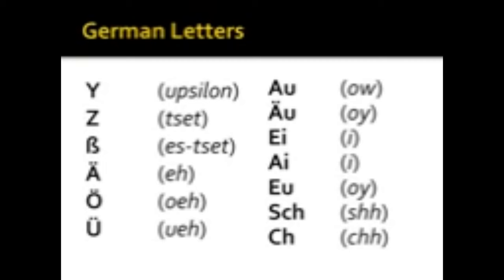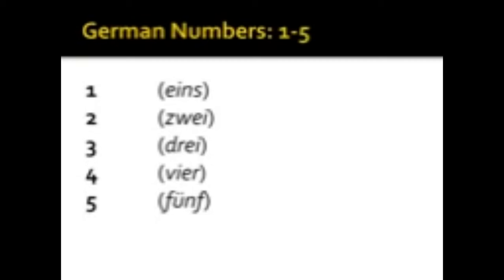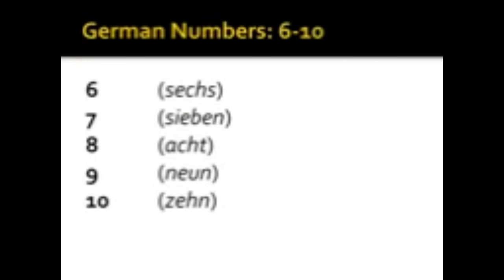Let's move on to look at German numbers. So what we have is eins, zwei, drei, vier, fünf, sechs, sieben, acht, neun, zehn.